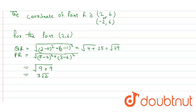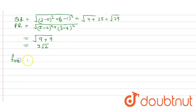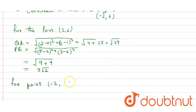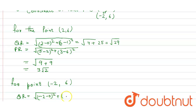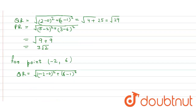Now for the point (-2, 6), we find QR. QR = √[(-2 - 0)² + (6 - 1)²] = √[4 + 25] = √29.